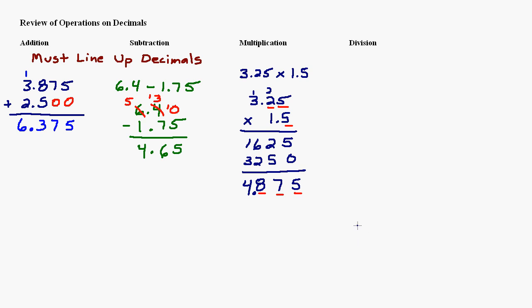A good way to check your decimal placement when multiplying is to estimate. 3.25 is close to 3 and 1.5 is close to 1 or 2, so the answer should be somewhere between 3 and 6. Therefore 4.875 makes sense. If the decimal were elsewhere — like 48.75 or 0.4875 — it wouldn't make common sense. Use your common sense when checking your multiplication.